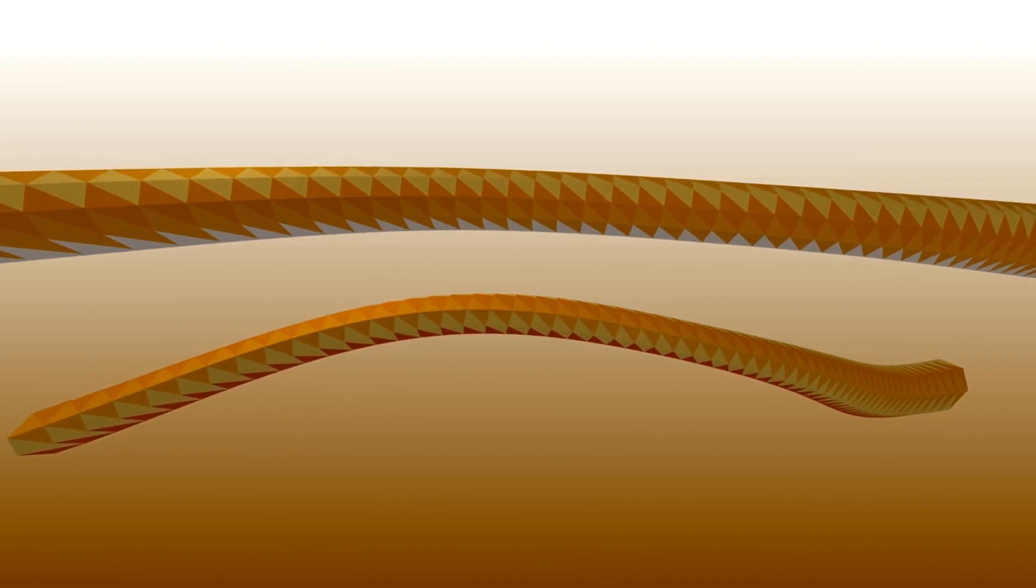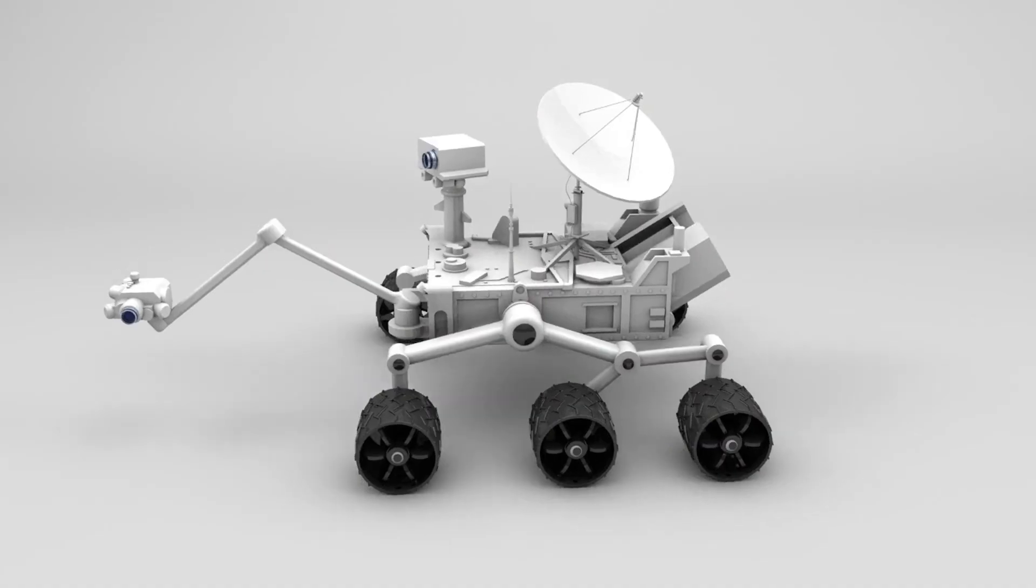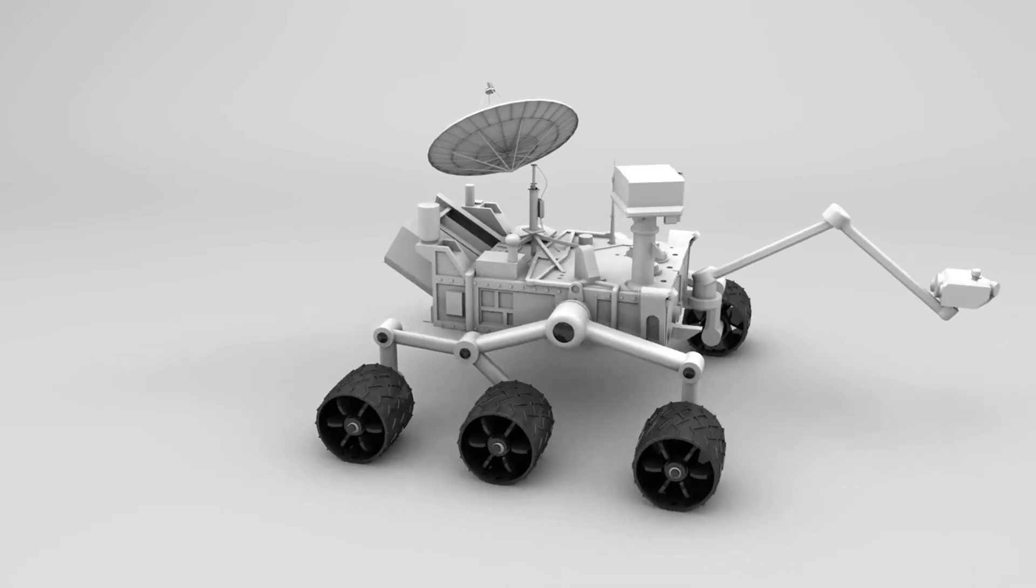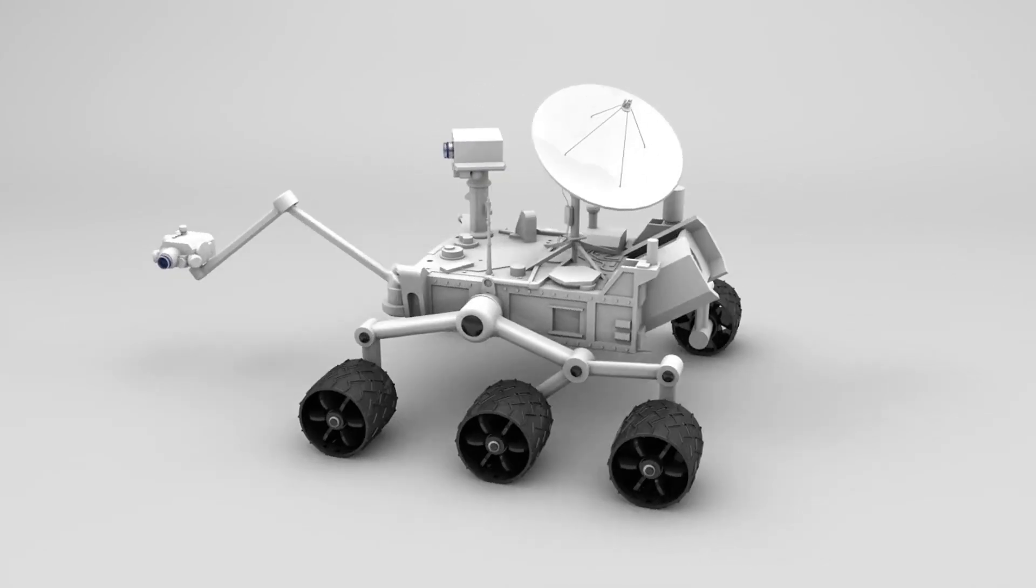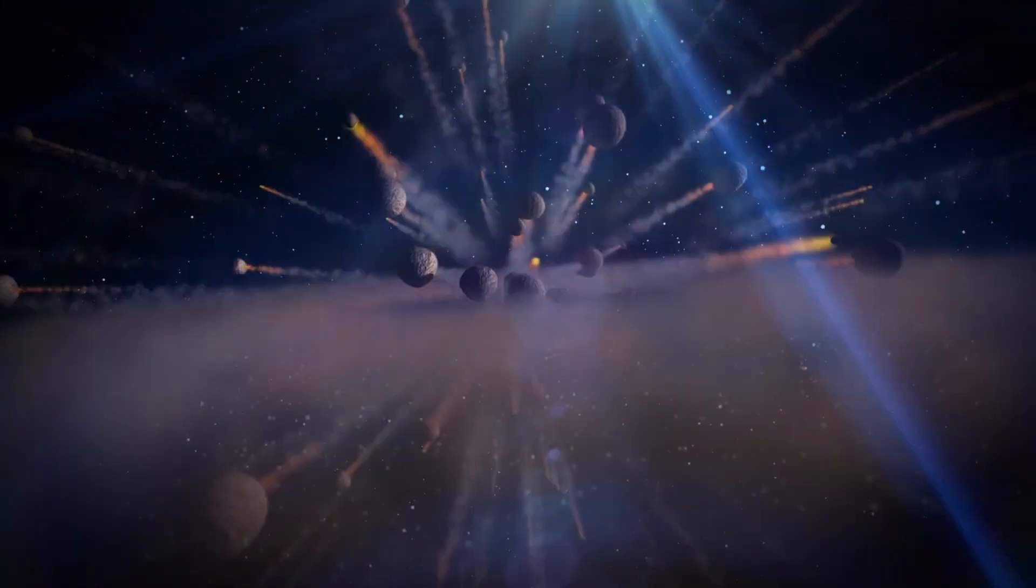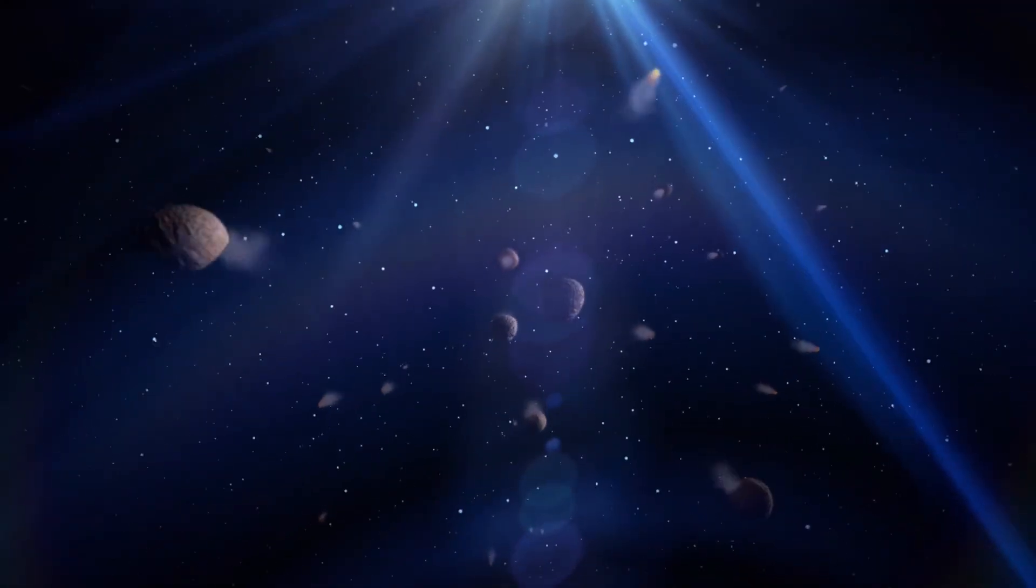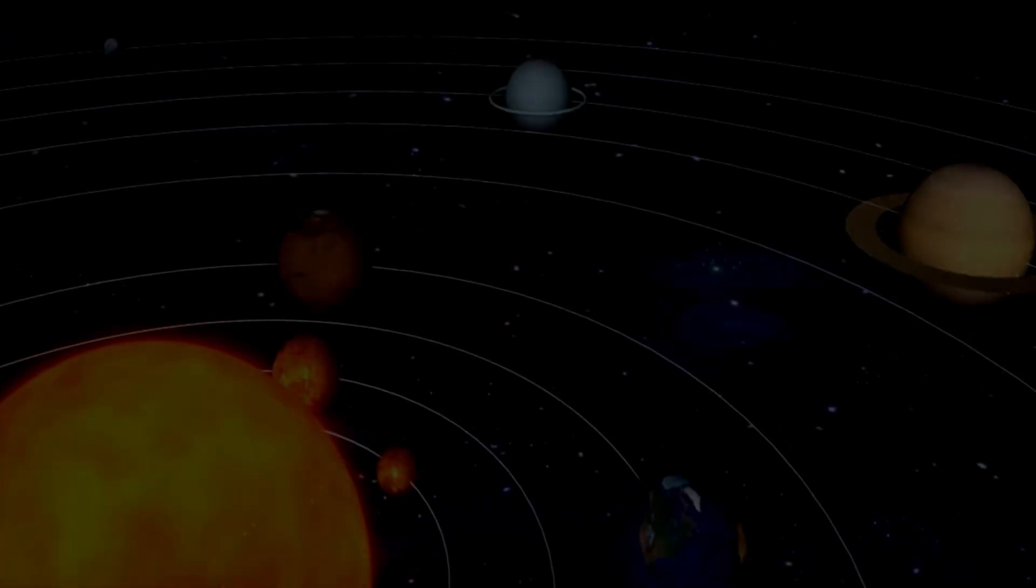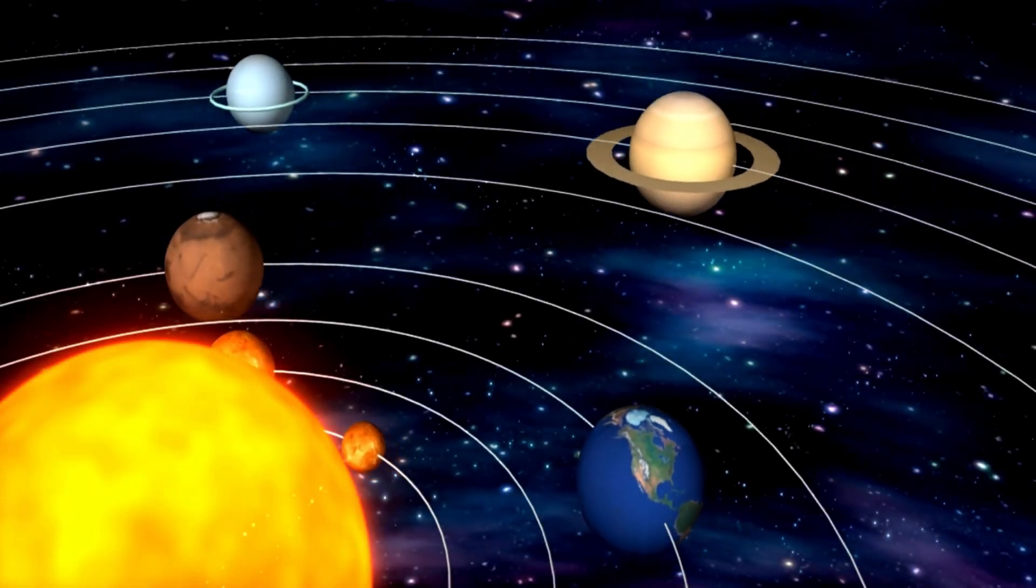A diminutive robotic spacecraft is poised to offer us the first intimate look at Pluto, a mysterious and icy world residing at the very edge of our solar system. Orbiting within what we call the Kuiper Belt, Pluto is accompanied by thousands of other celestial objects, much like a cosmic sibling to our familiar asteroid belt.